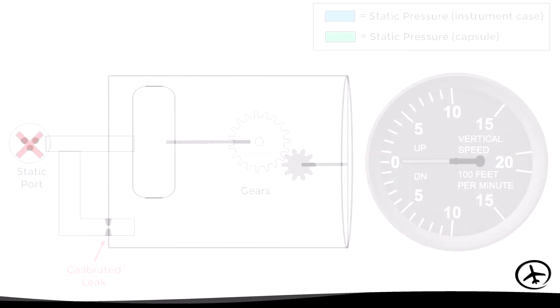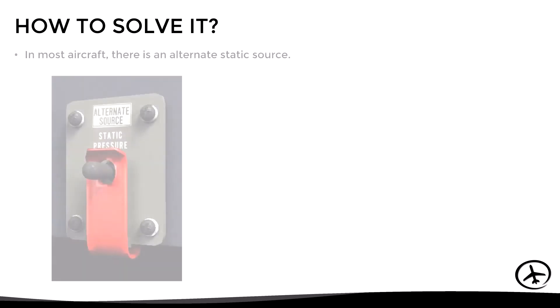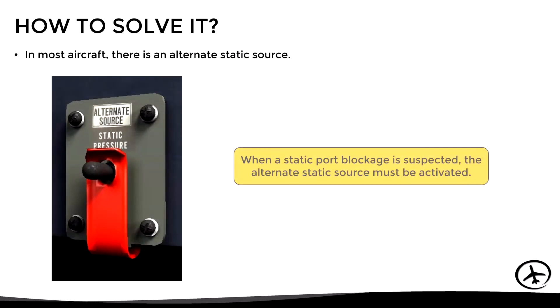This happens because the pressure in the capsule and inside the case is the same, and since there is no pressure differential the instrument will interpret it as level flight. To solve this situation, most aircraft incorporate an alternate static source which must be activated when a static port blockage is suspected.